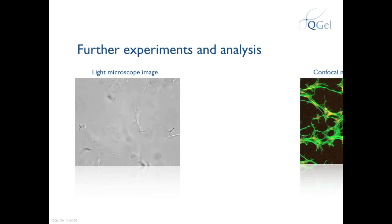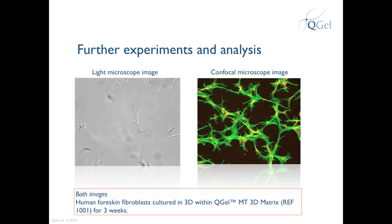Taken with a confocal laser microscope using fluorescence staining methods, pictures of the cells like this can be taken. Both these images are human foreskin fibroblasts cultured in 3D within QGEL MT3D matrix.